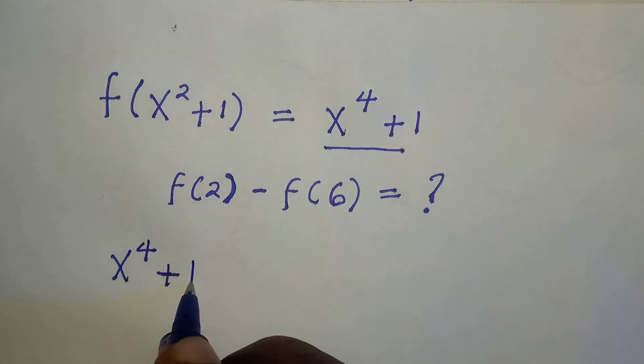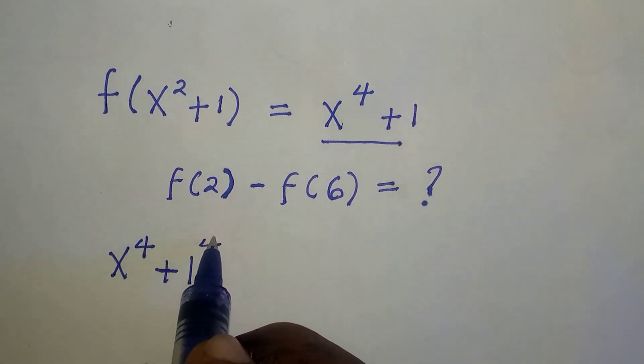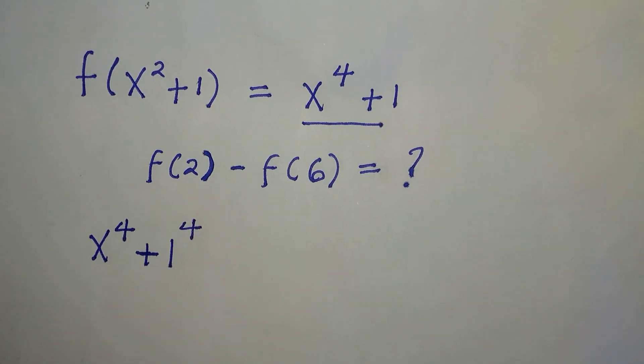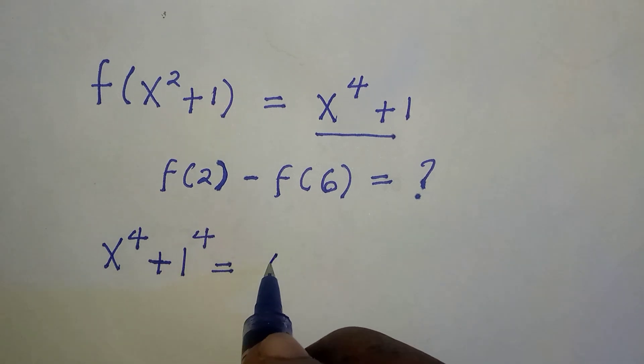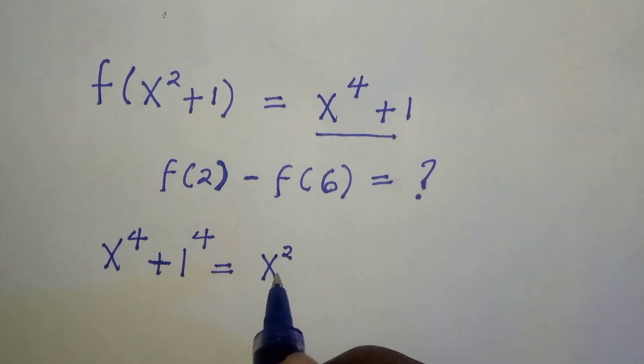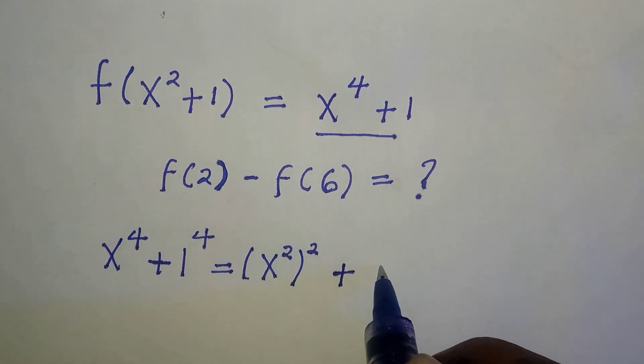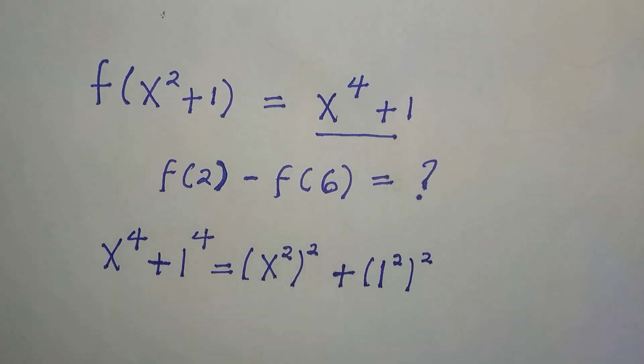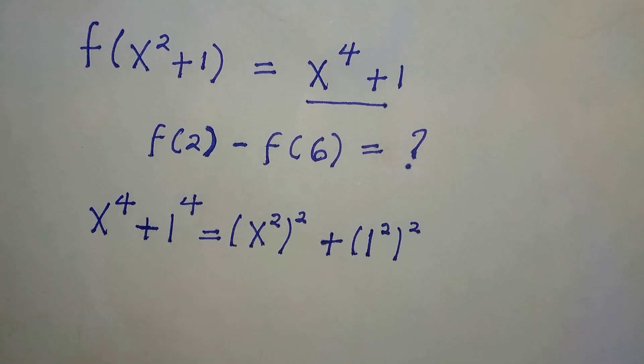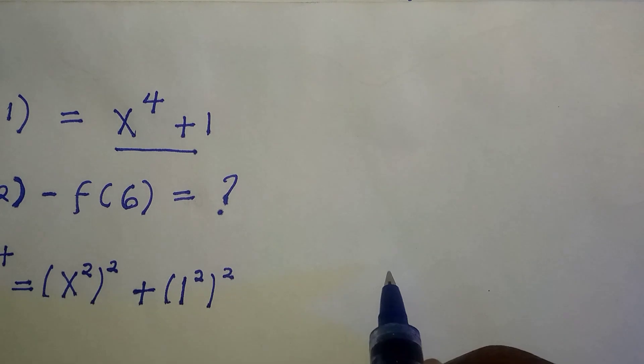If x raised to power 4 plus 1 raised to power 4, which is 1, it is equivalent to x raised to power 2, everything raised to power 2 from the power of indices, plus 1 raised to power 2. Don't forget this x is a member of real numbers.